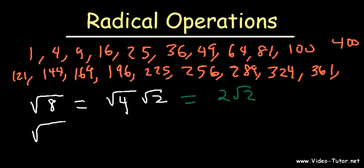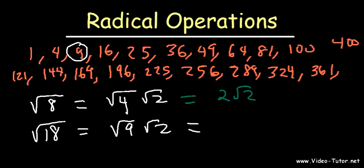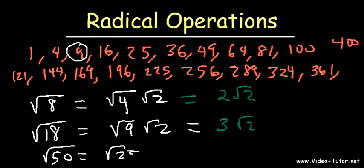Let's try another example. Simplify the square root of 18. What's the highest perfect square that goes into 18? It's 9. 18 divided by 9 is 2, so the square root of 18 is the square root of 9 times the square root of 2. The square root of 9 is 3, so this simplifies to 3 root 2. Now for the square root of 50: 25 times 2 is 50, and 25 is a perfect square, so this simplifies to 5 root 2.